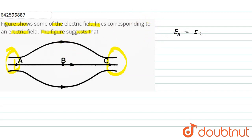But as it is clear from this figure, the electric field density at point B is less than the electric field at point A and at point C.